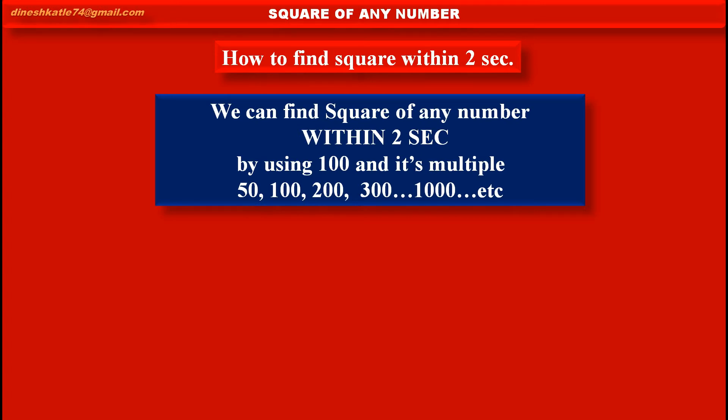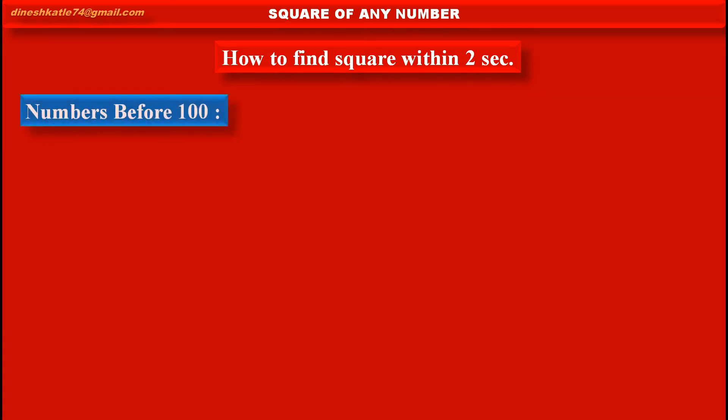First, we have to find square of numbers which are nearest to 100, either less than 100 or greater than 100. Now, let's see numbers before 100, means less than 100.